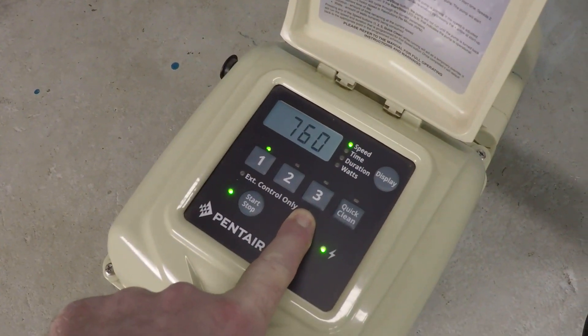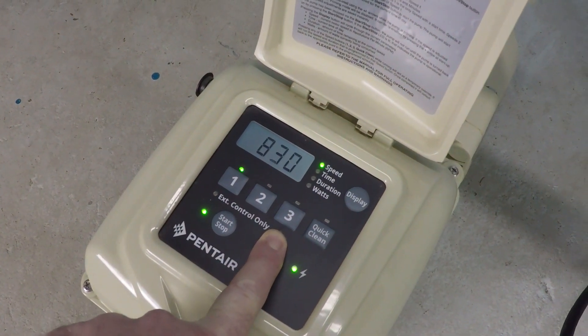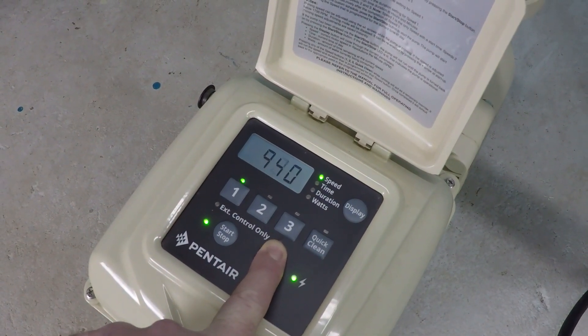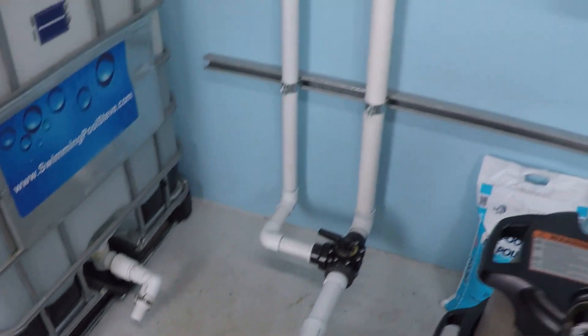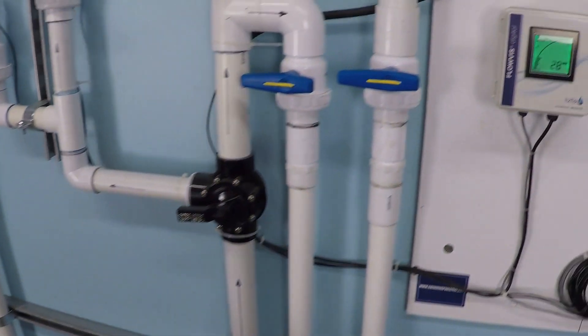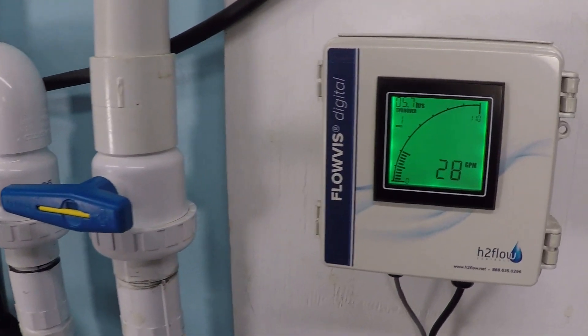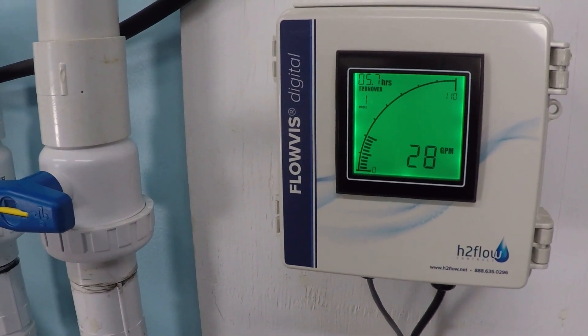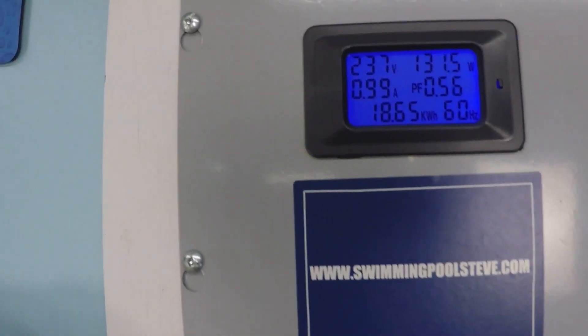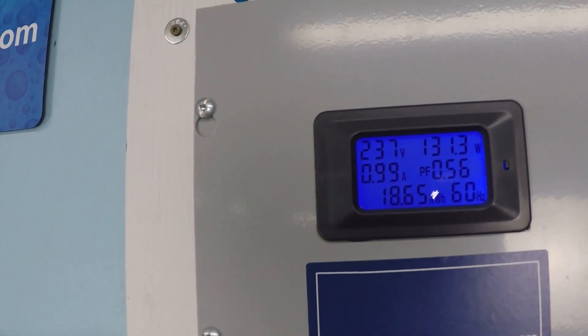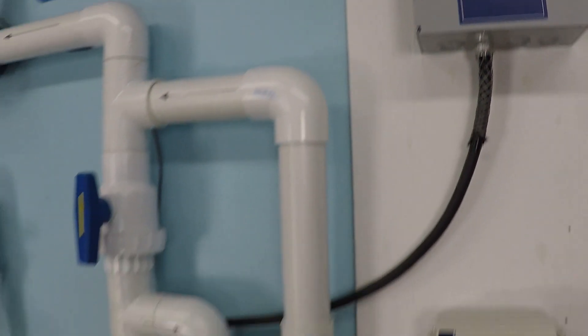So let's go ahead and jump up to a thousand here. Really quiet. Variable speed pumps are extremely quiet especially at the low RPMs. We're up to about 28 gallons per minute and just over 131 watts of power consumption.